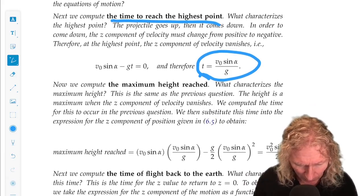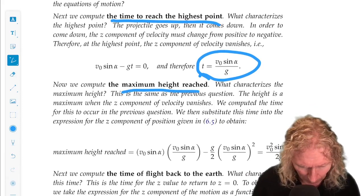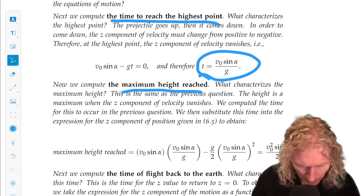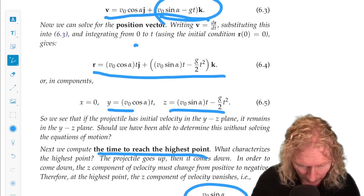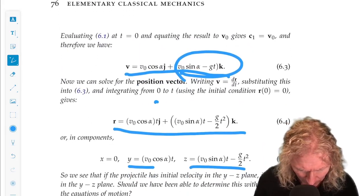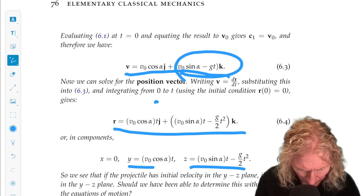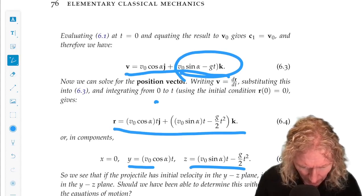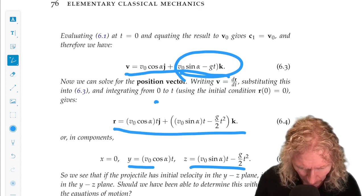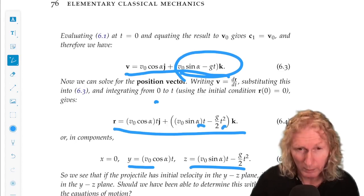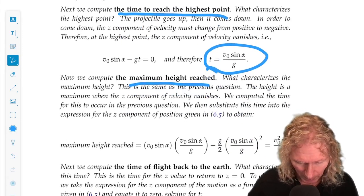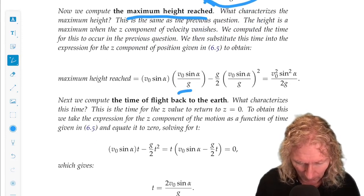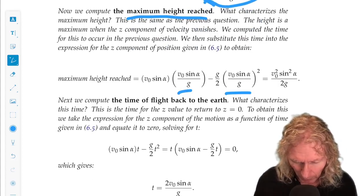Now if we want to find the maximum height reached, we plug in the position. We go back to the position as a function of time. And we plug in the value of t for the time to reach the highest point. And that's what you're seeing here. And we get this expression.